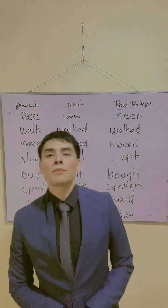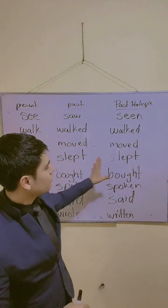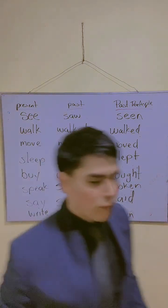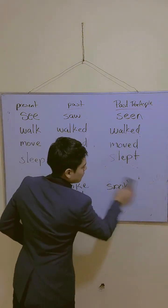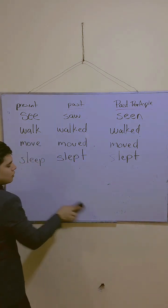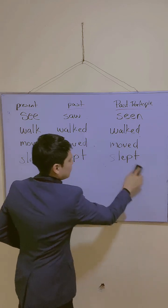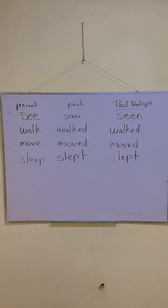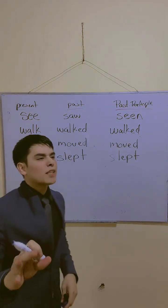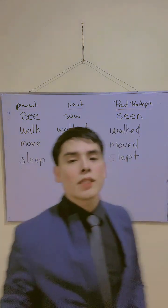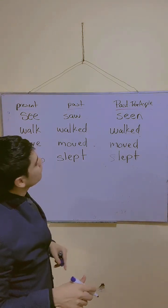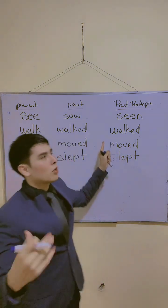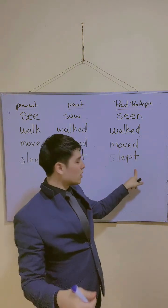Ya que sabemos cuál es la forma de los verbos, vamos a quedarnos con ellos. Vamos a quedarnos con algunos cuantos para hacer otros ejemplos. Ustedes me estaban poniendo — les había puesto unos ejemplos, denme unos ejemplos con el verbo en pasado.